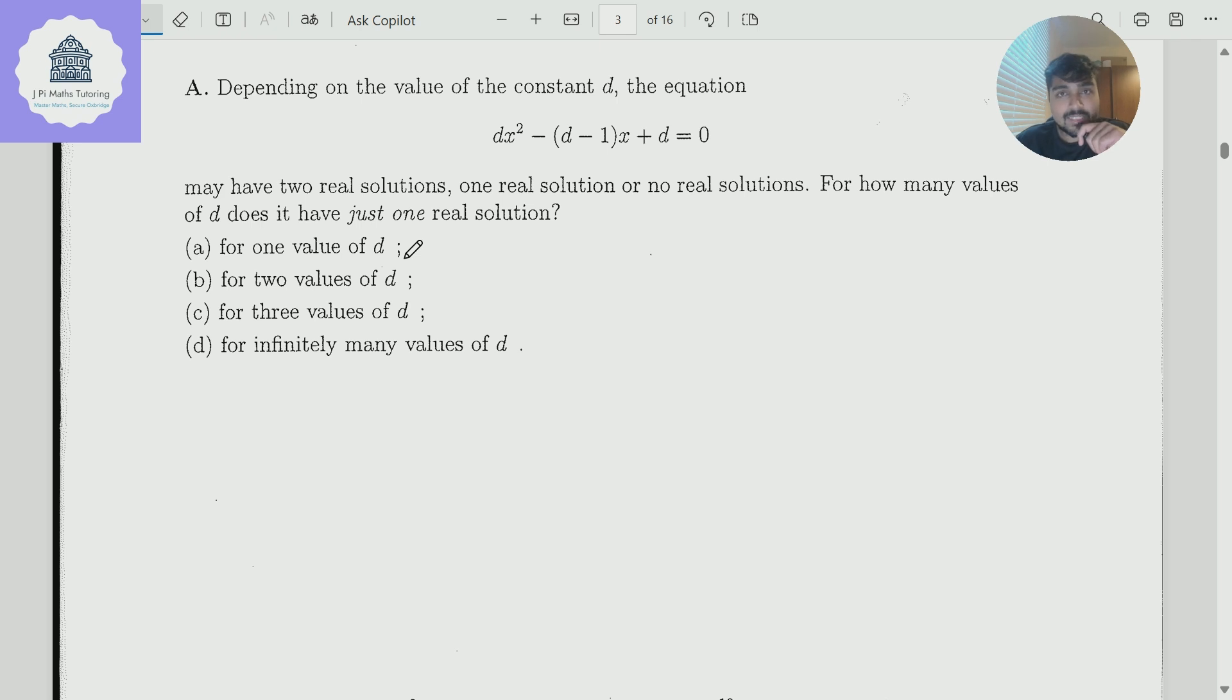Okay, so this is a quadratic, so we'll do the thing that we want to do, is look at the discriminant of this guy. So the discriminant is minus (d-1) squared minus 4 times d times d, or 4d squared, and we want to make that equal 0 because we want this to have one real solution.